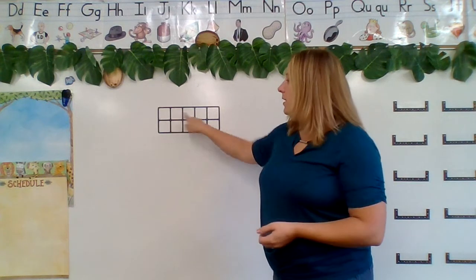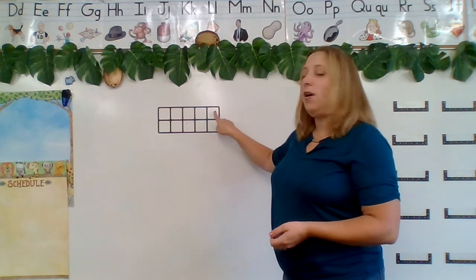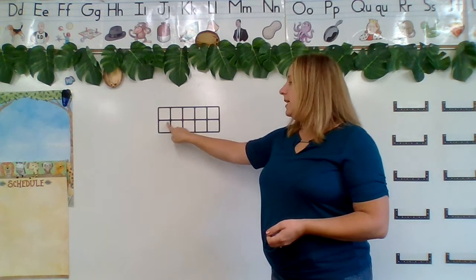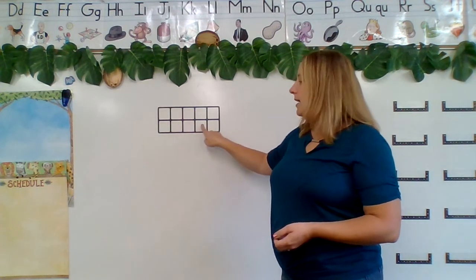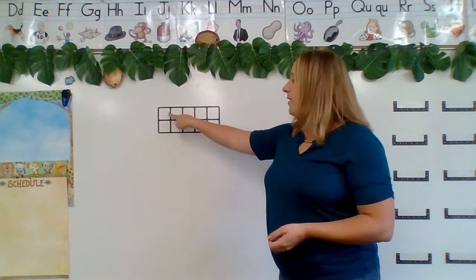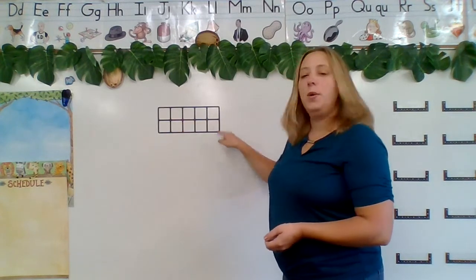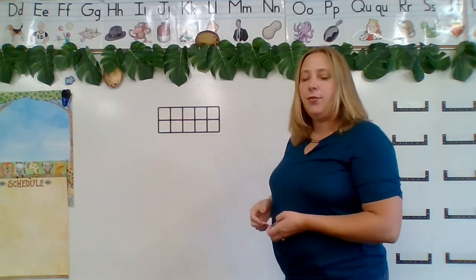1, 2, 3, 4, 5, 6, 7, 8, 9, 10. So I have five rows on the top, five rows on the bottom. That's what a 10 frame is.